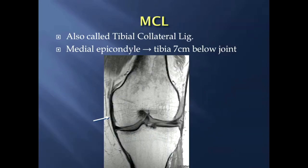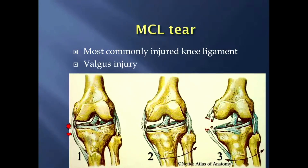Moving on to the medial collateral ligament, also called the tibial collateral ligament because its distal insertion occurs on the tibia. The MCL arises from the medial epicondyle, and its insertion is about 7 centimeters below the joint line. A typical knee MR coronal image with a 14-centimeter field of view will often have the MCL attachment site occurring right at the bottom of the image.